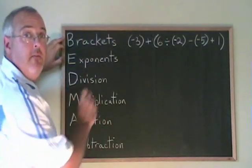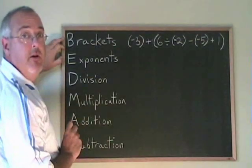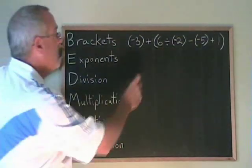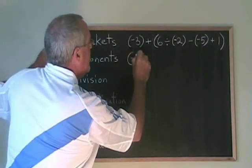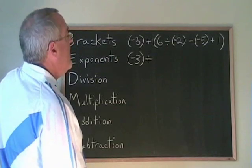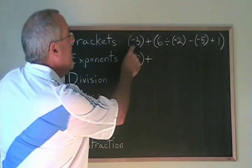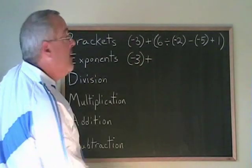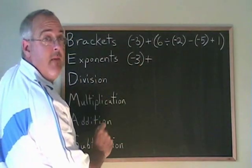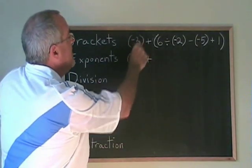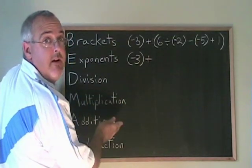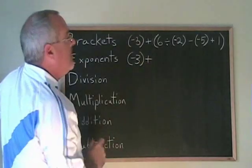Do one thing at a time and write a new line for each operation you do. BEDMAS says brackets first, so we are ignoring the negative 3 plus, and we are starting our work with this bracket. Keep in mind that I put a bracket around negative 3, but this isn't a bracket as an operation. This is a bracket that is there just to stop me from missing this negative sign. It makes it easier to read. There's no operation inside this bracket.